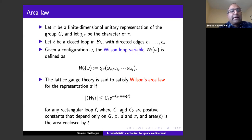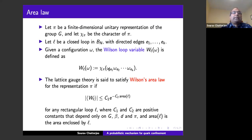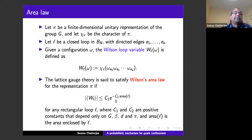The surprising thing is: if you have exponential decay of correlations, you'd expect the Wilson loop to decay like the perimeter (length) of the loop, not the area. In fact, it's not very hard to prove a perimeter law bound. The question is why the area appears. I don't have time today to go into why this implies confinement of quarks, but there is some discussion in the paper.